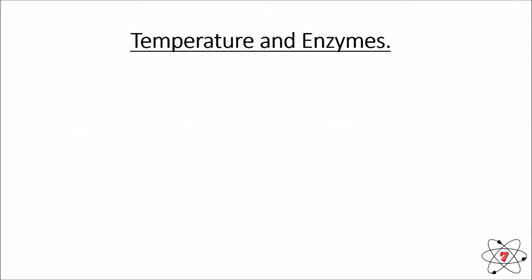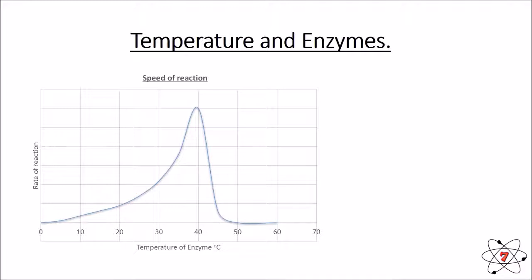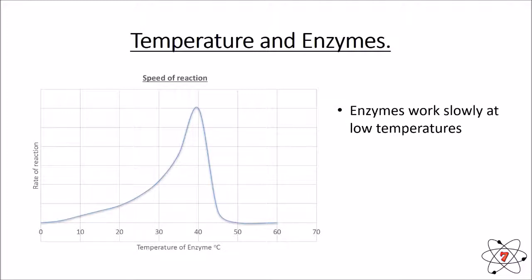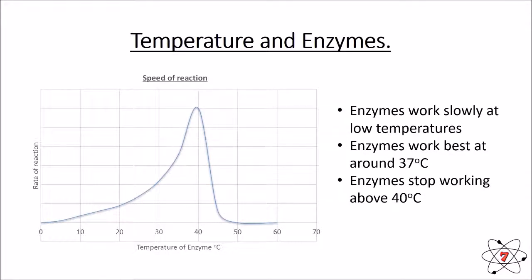Enzymes are greatly affected by temperature. Looking at a graph of the rate of reaction at different temperatures: at zero degrees Celsius, virtually no reaction takes place. At about 37 degrees Celsius the rate of reaction is fastest — and 37 degrees Celsius is human body temperature. Above 37 degrees the reaction becomes much slower, and at about 45 degrees Celsius it stops altogether. So enzymes work very slowly at low temperatures, best at around 37 degrees Celsius, and stop working above 40 degrees Celsius.